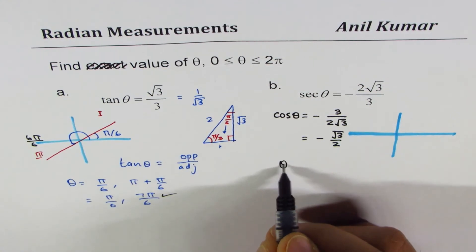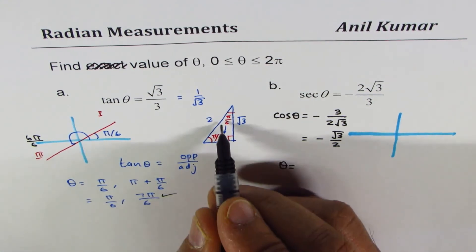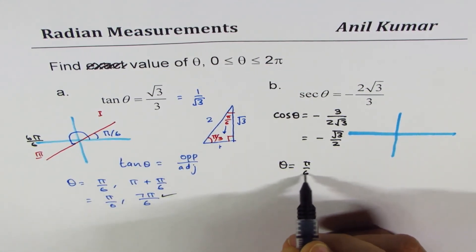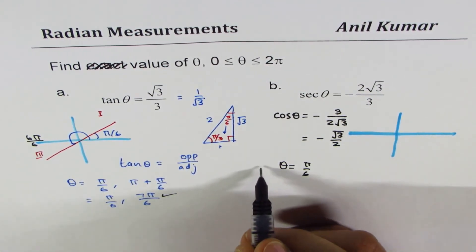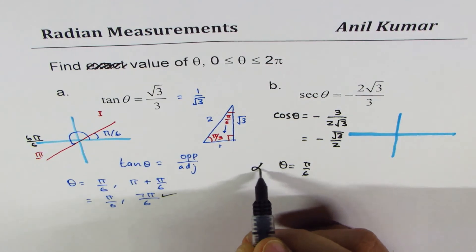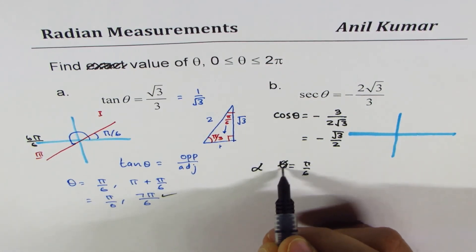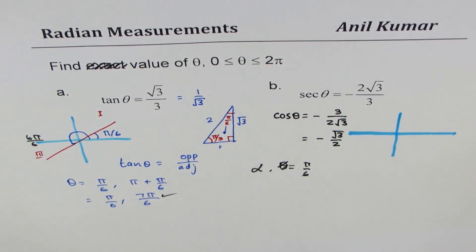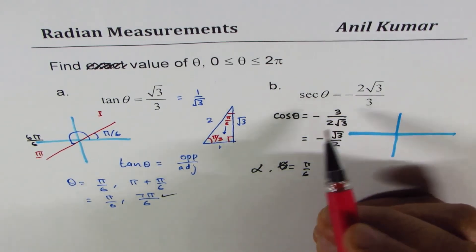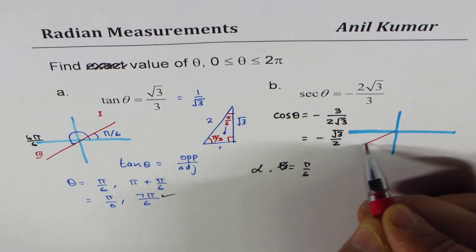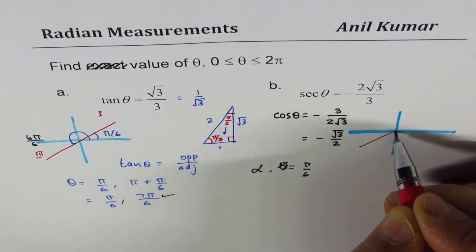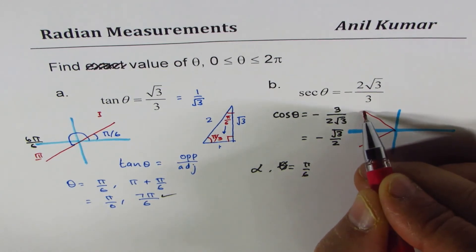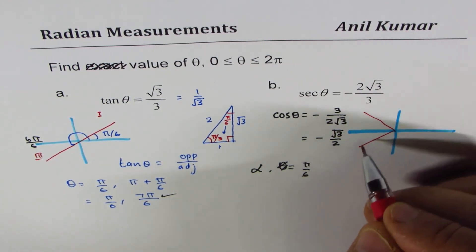The related acute angle alpha is π/6. Since cosine is negative, the terminal arm is in quadrants 2 and 3.